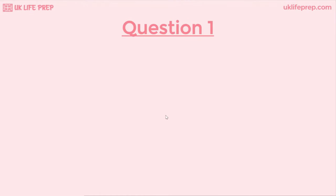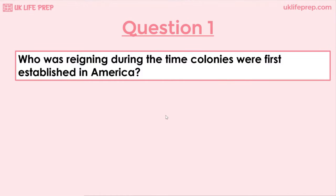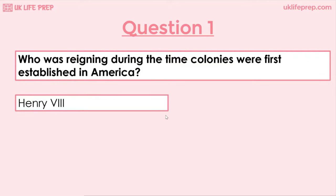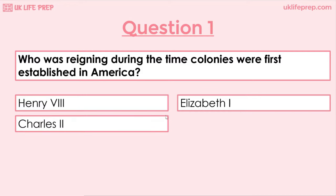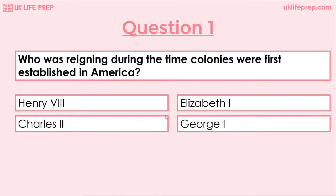Question 1: Who was reigning during the time colonies were first established in America? Henry VIII, Elizabeth I, Charles II or George I? The correct answer is Elizabeth I.